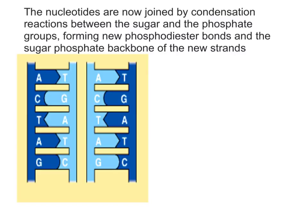The nucleotides are now joined by condensation reactions between the sugar and the phosphate groups of the nucleotides. This forms new phosphodiester bonds and a new sugar phosphate backbone of the new strands. This uses the enzyme DNA polymerase.